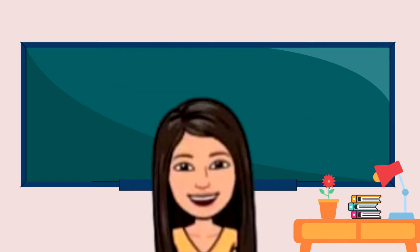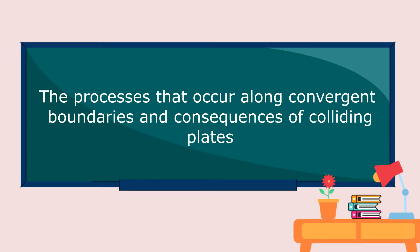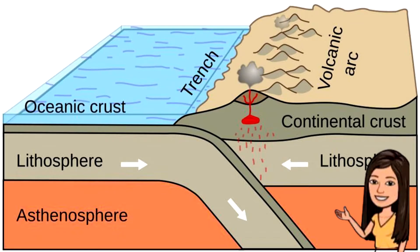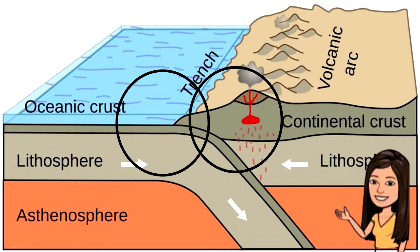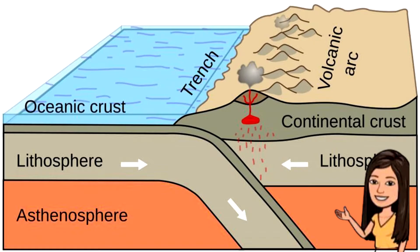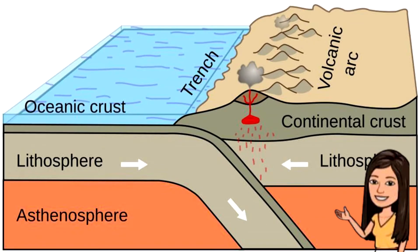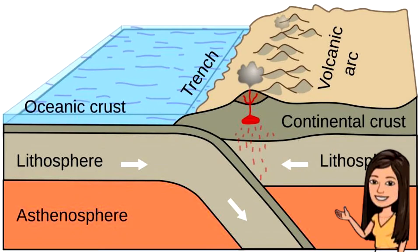Now let's proceed to the processes that occur along convergent boundaries and determine the consequences of colliding plates. In the event of collision of two plates with a continental edge and oceanic edge, it will give rise to the formation of a volcanic arc near the edge of a continental leading plate. The reason behind this is the subduction process, or the bending of crust towards the mantle. A trench is a geologic feature formed for the oceanic crust. Another effect of the grinding of plates against each other is the occurrence of earthquakes.